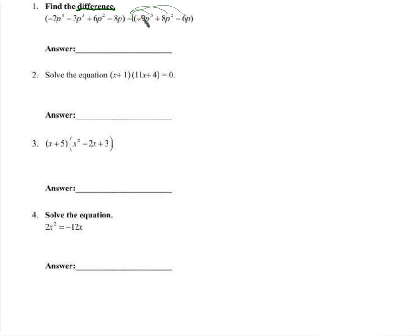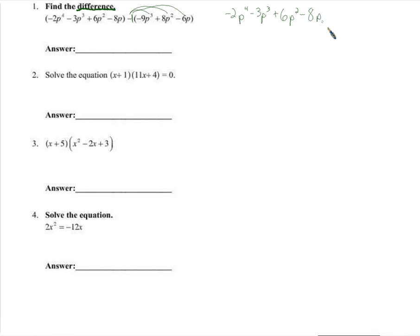That's what it means to subtract this polynomial — to subtract this, subtract this, subtract all of it. So we have negative 2p to the fourth minus 3p cubed, just recreating exactly the first parentheses because there's nothing acting on it. I don't have to multiply it by anything, raise it to a power, or divide it by anything. But I do need to distribute this negative 1 to the second polynomial, and I get plus 9p cubed minus 8p squared plus 6p.